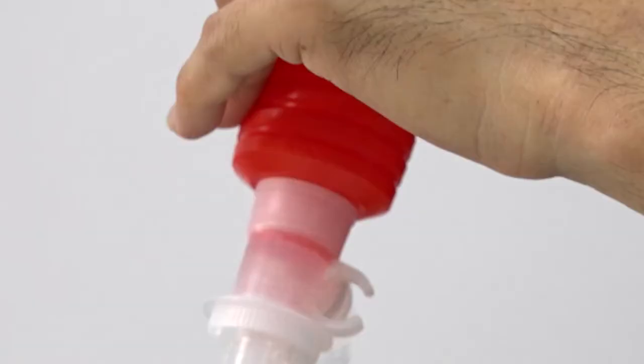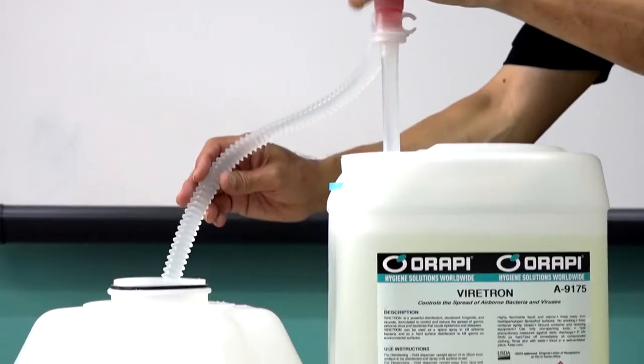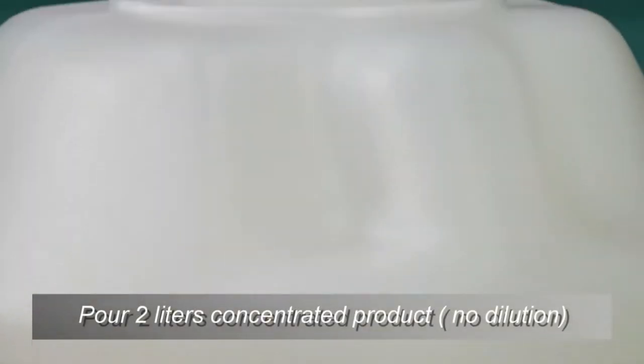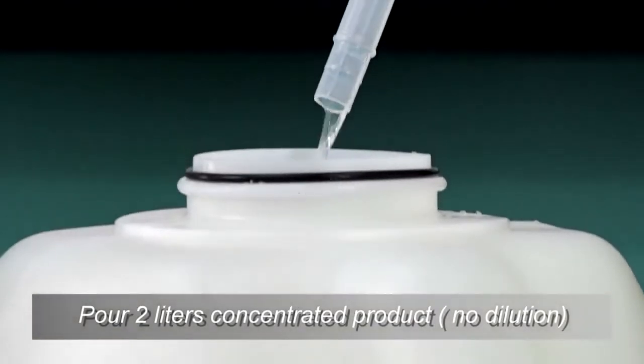For fogging, use Arapi space generator. Fill the canister with two liters of Viratron concentrated product. No dilution is required.